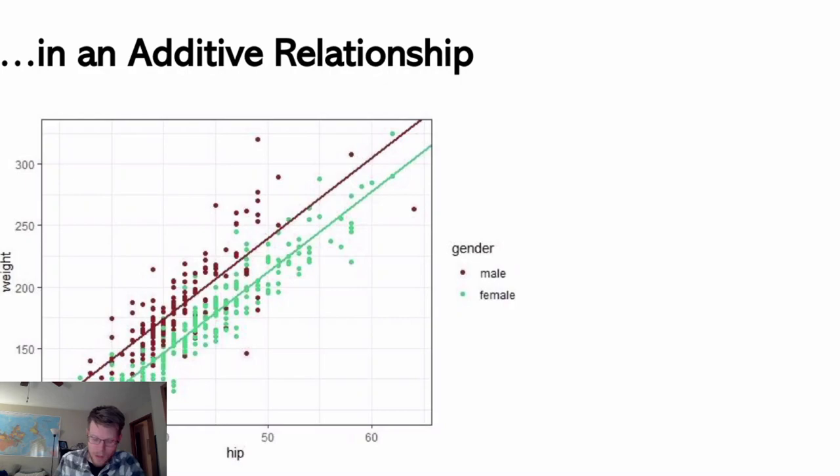So the model I'm essentially fitting now is going to be y hat equals our intercept, plus this linear relationship with hip size, plus this other value that gets added when the gender is one thing or not. We assign one of those categories for gender to be one, so X2 equals one when that gender is the case. X2 equals zero when that gender is not the case. And that's how we make that change.